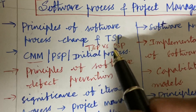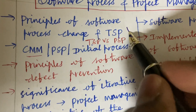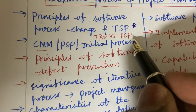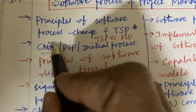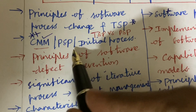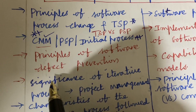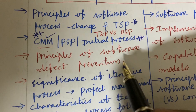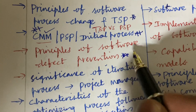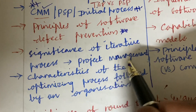The first and foremost question is the principles of software process change, and TSP and the differences between TSP versus PSP and CMM — said to be one of the top most questions. PSP and the initial process defined may be a two-mark question. Principles of software defect prevention is a five-mark question.